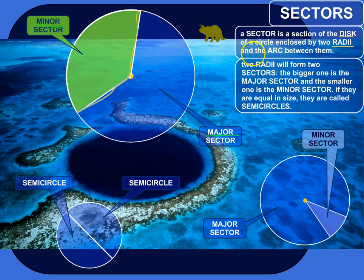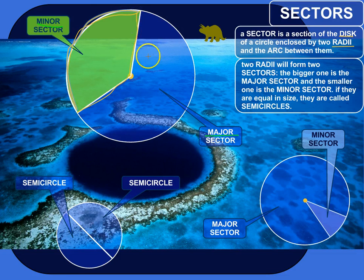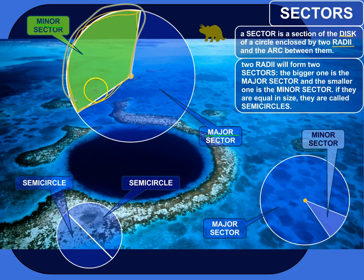The last bit is it's enclosed by the two radii and the arc between them. This is the arc — it's a distance on the circle. So we've got a radius, radius, arc, and it's creating a boundary around a section of the disc of the circle, and that is what we would call a sector.